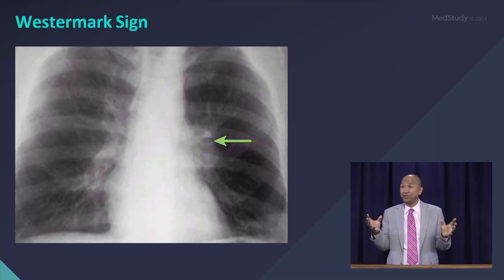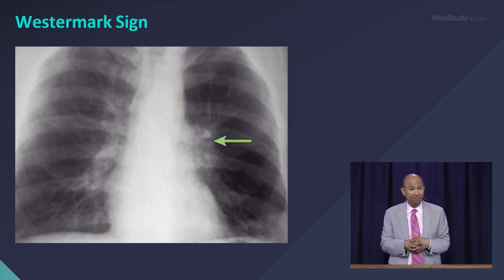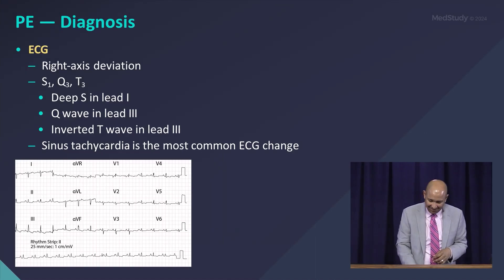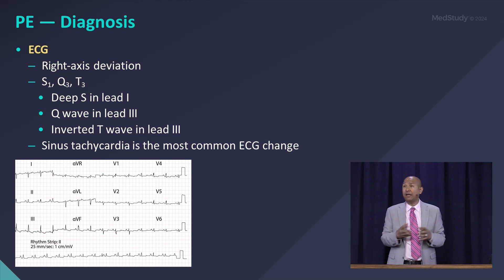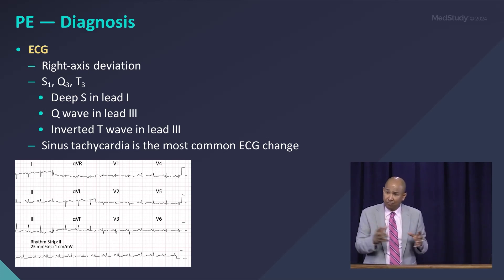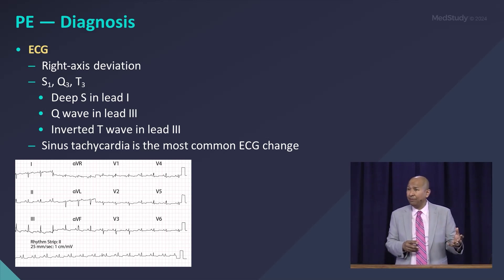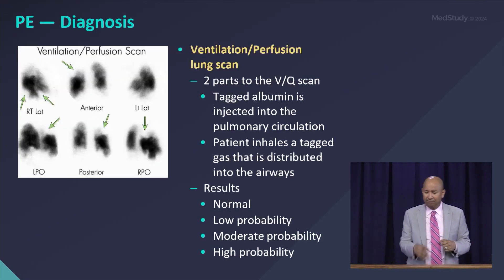Can you diagnose a PE solely based on an ECG? In general, no. But the most common finding on ECG is sinus tachycardia. There are also findings that indicate right-sided heart strain: S1Q3T3, right bundle branch block, and right axis deviation — all associated with pulmonary embolism.